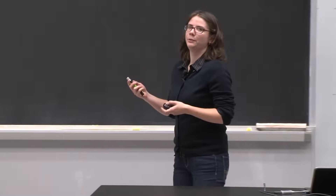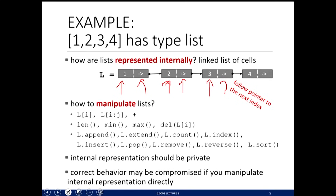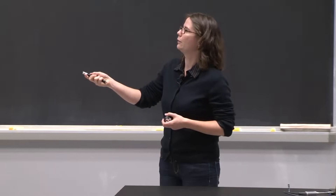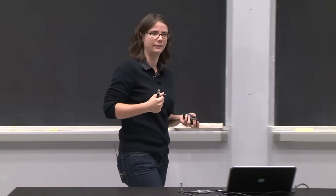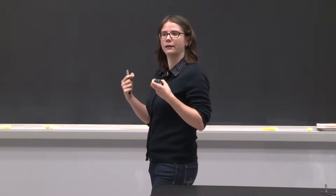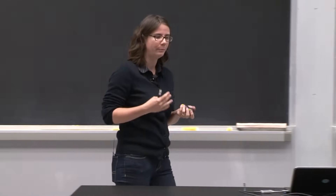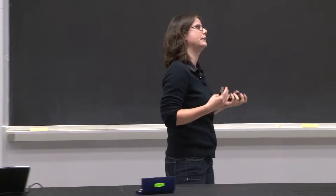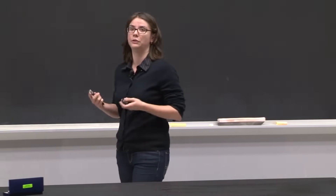How you manipulate lists — we've done this a lot. You can index into a list, add two lists together, get the length, append to the end, sort a list, reverse a list, and so many other things. These are all ways you can interact with the list object once it's created. Notice that both the internal representation and how you manipulate lists — you don't actually know internally how these are represented. How did whoever wrote the list class decide to implement a sort? We don't know. That's the beauty of object-oriented programming and having these data abstractions. The representations are private and only need to be known by whoever implemented them.